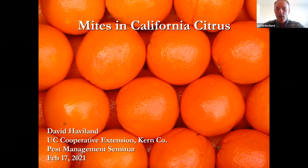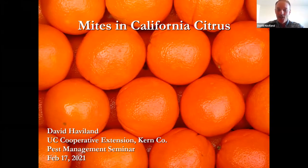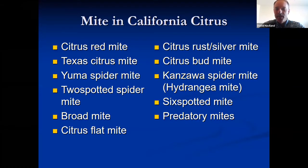I'll do my best to walk through mites in citrus in California, because there are a lot of them. The invitation I got is pretty much just an entry-level overview: what are the mites, how do you identify them, what damage do they do, where are they found in the state, and an overview on how they're managed. Hopefully by the end of this webinar, all of you will know the 10 or so mites most common in California citrus, and when looking at a pesticide label, you'll know which ones are relevant for wherever you're farming.